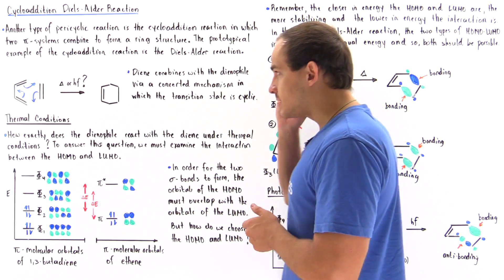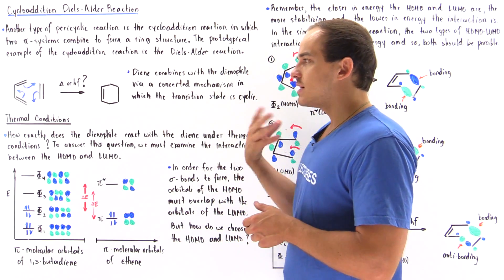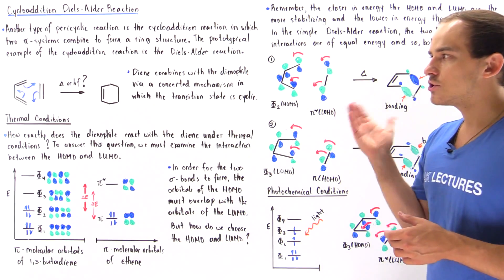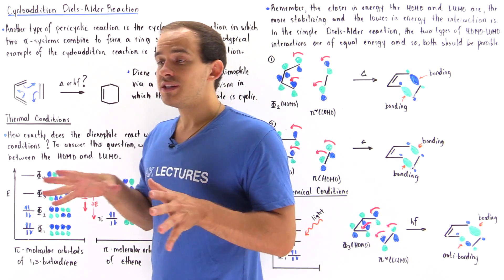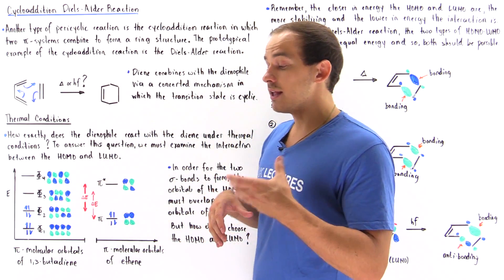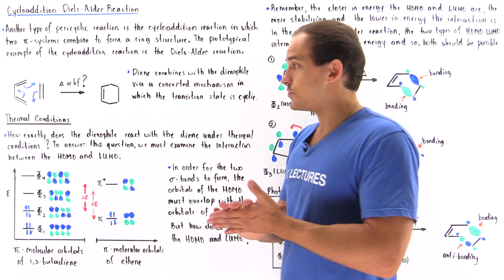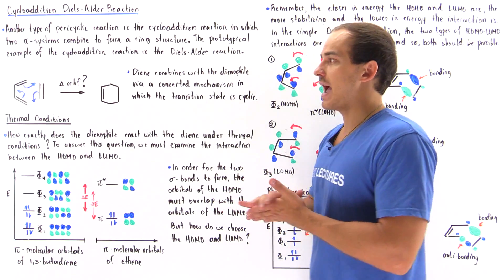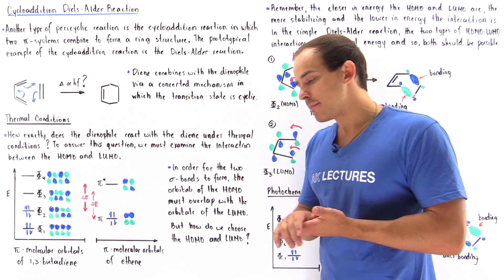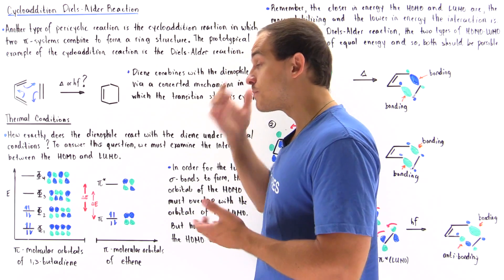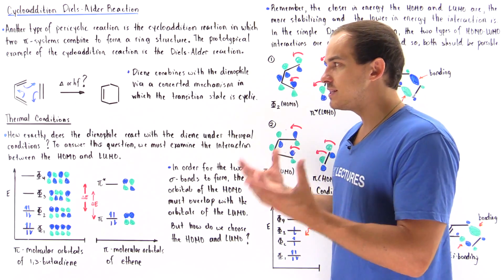The question we want to explore is: under what conditions will this reaction take place? We have two possibilities. As we discussed with electrocyclic reactions, we have thermal and photochemical conditions. In cycloaddition reactions, we also have thermal and photochemical conditions. The question is, will this reaction take place under both conditions?